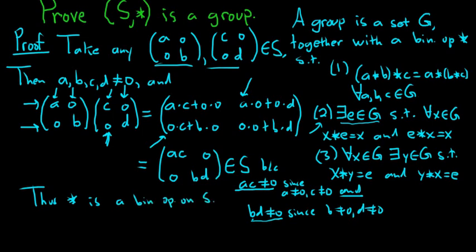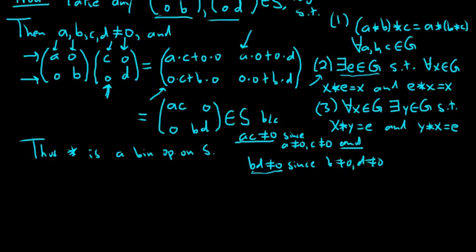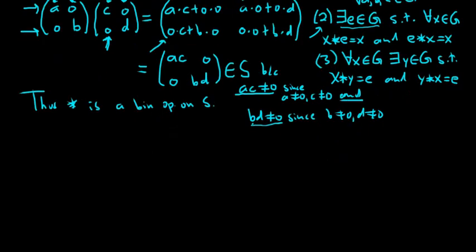This shows that star is a binary operation on S: we took two matrices in S and showed the product is also in S. Now we just have to go through the three group conditions. The most tedious will be associativity, so we'll do that one first.